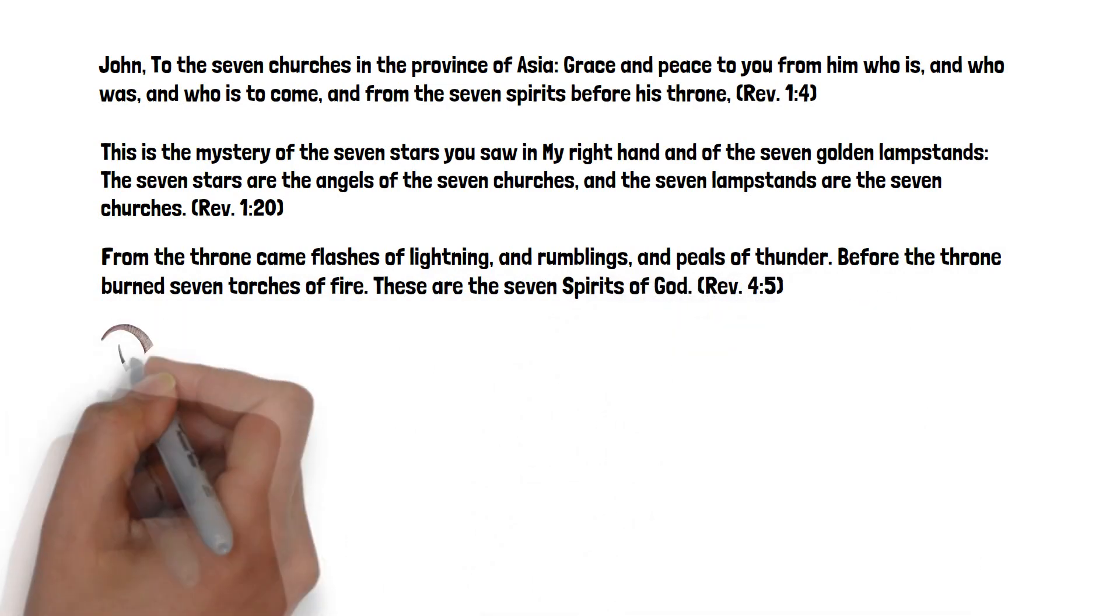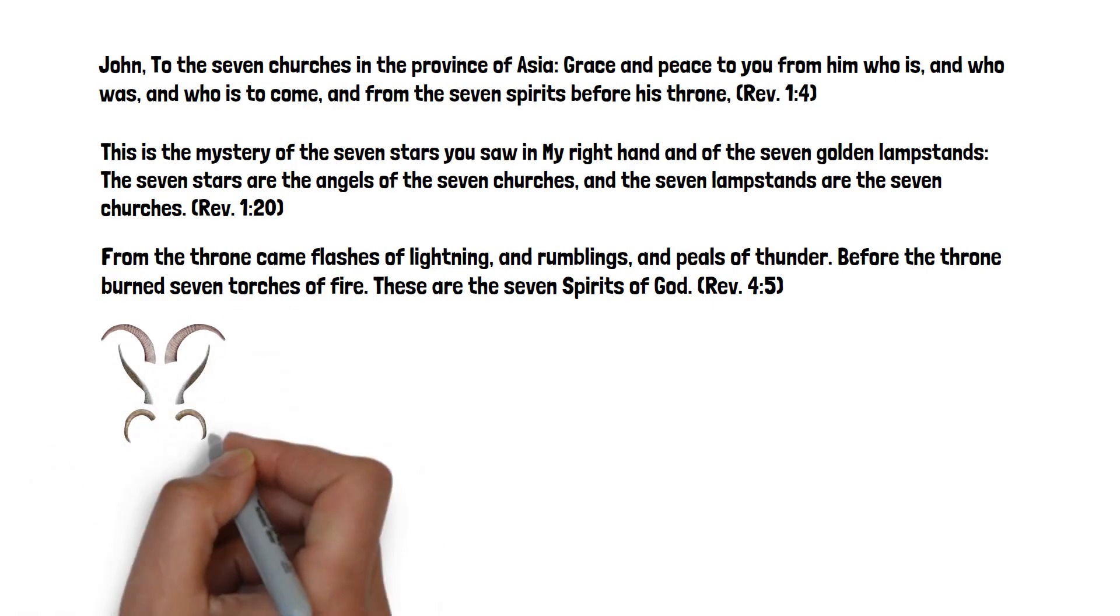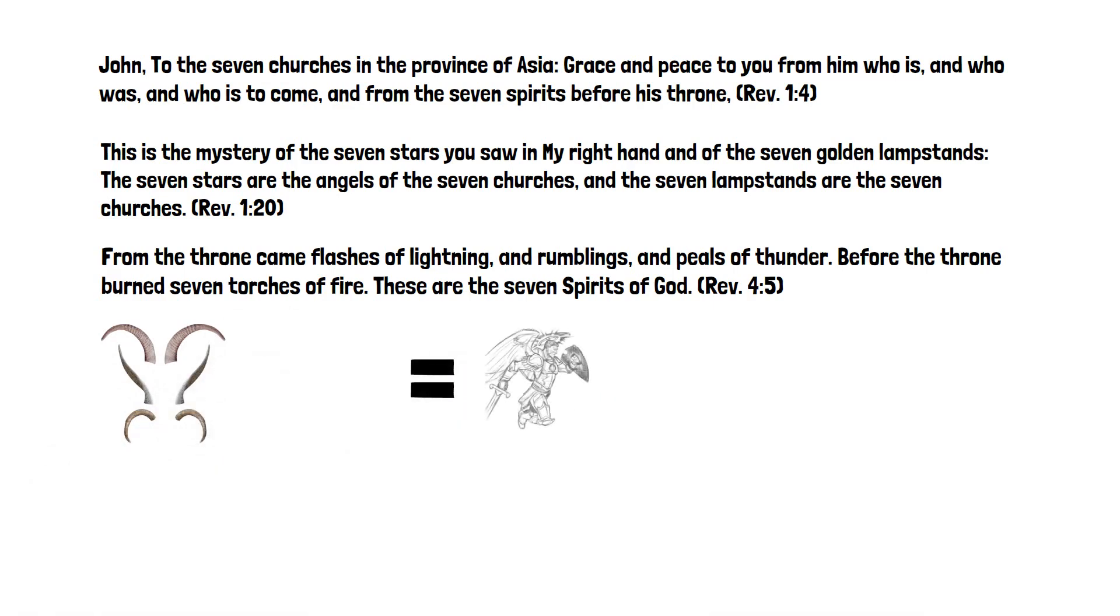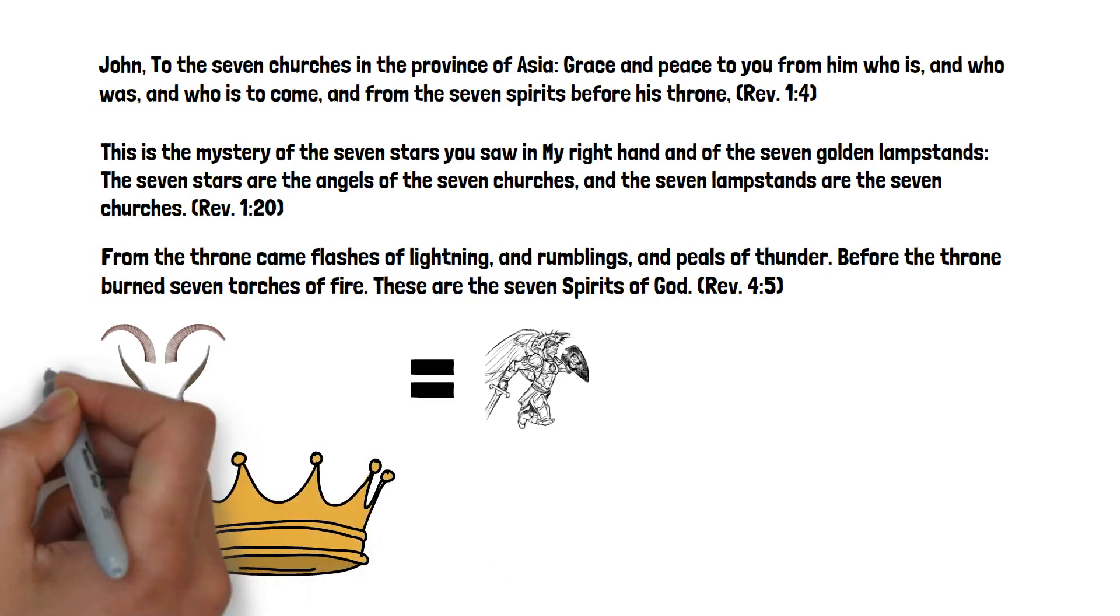Horns, as the Bible makes clear in the book of Revelation, represent mighty princes or spiritual authorities that sit upon heads or spiritual kings. In the case of Jesus, he is the head and the horns that sit upon him are the seven angels or spirits, stars or torches that do his bidding.